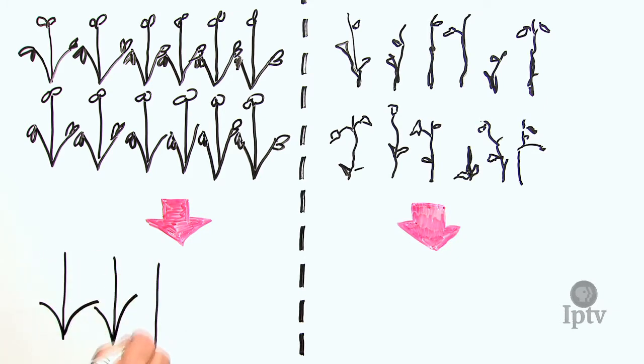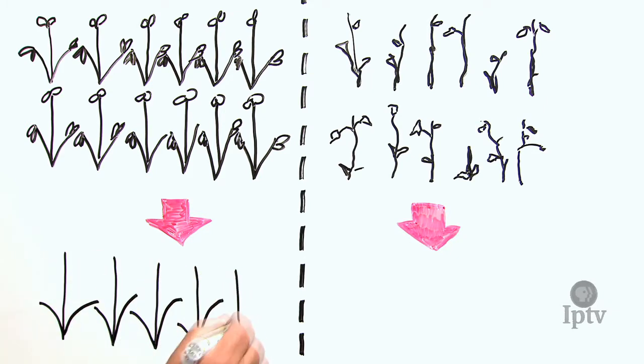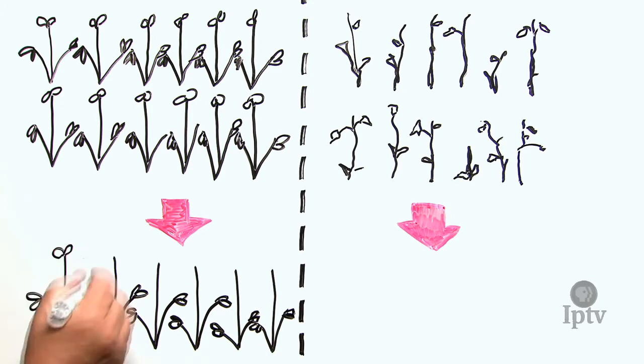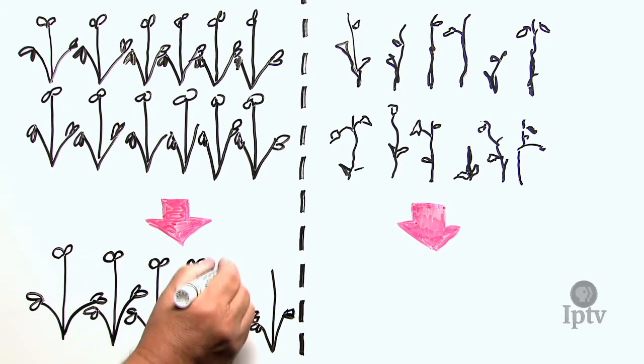The domestication of soybean was an act of artificial selection. Humans decided which plants would survive and reproduce in their fields. Mating these plants with one another over many generations would eventually mean that all the plants in our fields were genetically similar to one another.